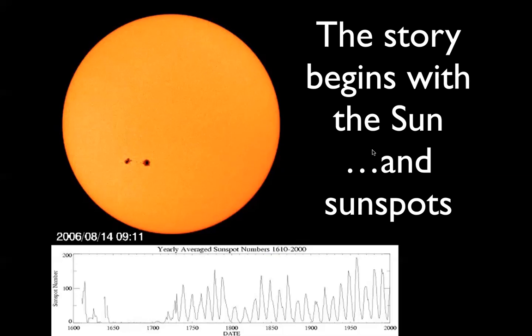And such Maunder type minima happen at other stars, sun-like stars, stars that got roughly the same mass and luminosity as the sun. So there's still a lot about the solar cycle we don't understand, but there are certain things that we do think we understand.